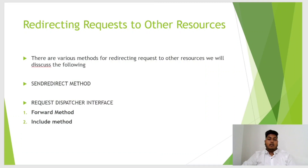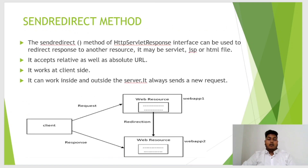Now we will see redirecting requests to other resources. There are various methods, but we will discuss two: the sendRedirect method and the RequestDispatcher method. The RequestDispatcher interface contains two methods: the forward method and the include method. The sendRedirect method of the HttpServletResponse interface can be used to redirect a response to another resource — it may be a servlet, JSP, HTML file, or any other file. It accepts relative as well as absolute URLs, works at the client side, can work inside or outside the server, and always sends a new request. As shown in the figure, the client requests webapp1 and it is redirected to webapp2.